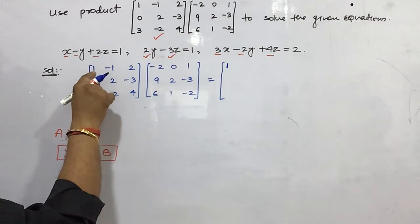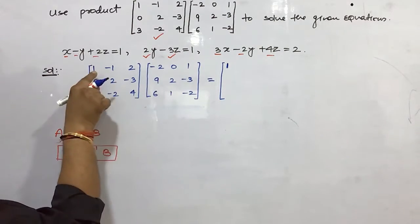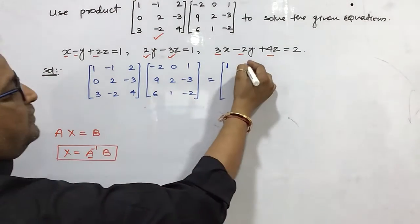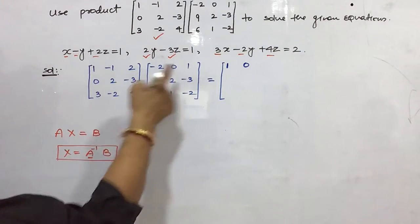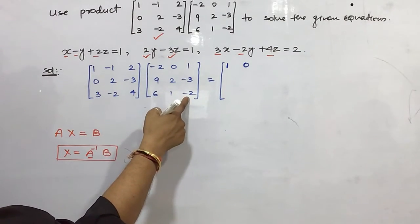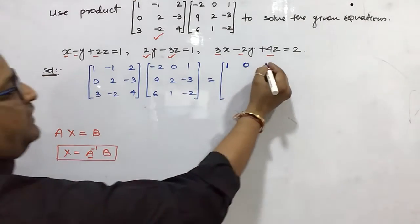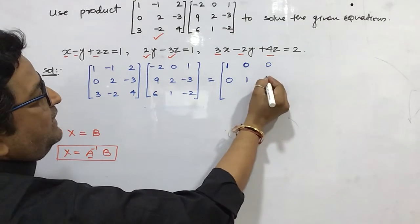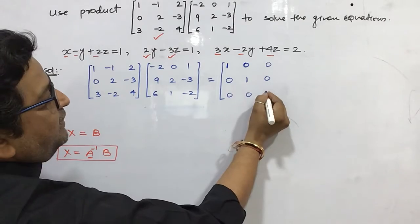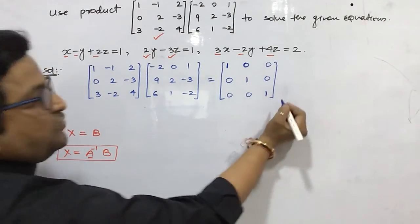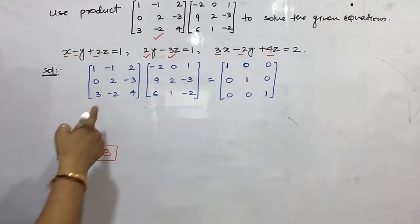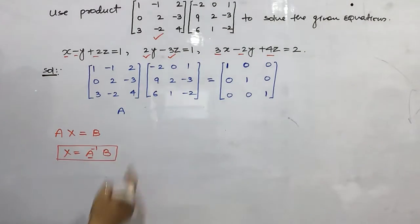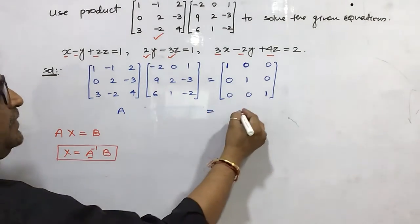Similarly, multiplying the first row by the second column: 1×0, 1×(-2), then 1×1, 1×3, and 2×4 — giving zero. When you complete all multiplications you will get an identity matrix.